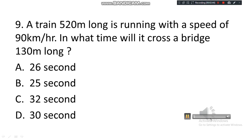Question number 9. A train 520 meters long is running at a speed of 90 km per hour. In what time will it cross a bridge 130 meters long? Option A: 26 seconds. Option B: 25 seconds. Option C: 32 seconds. Option D: 30 seconds. Time is calculated by distance divided by speed.